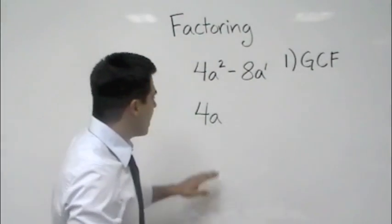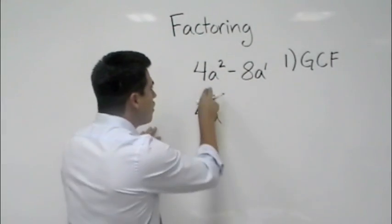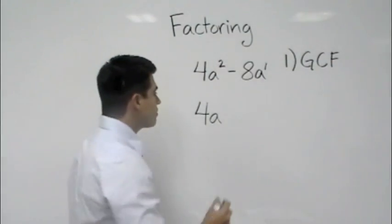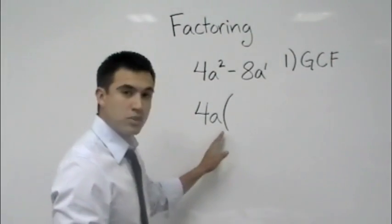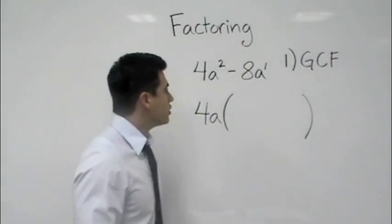Now we can see that we have our greatest common factor for this binomial. Like I said, that's the hardest part. Now what you want to do is write a parenthesis right next to it. Now this is what we're going to do.